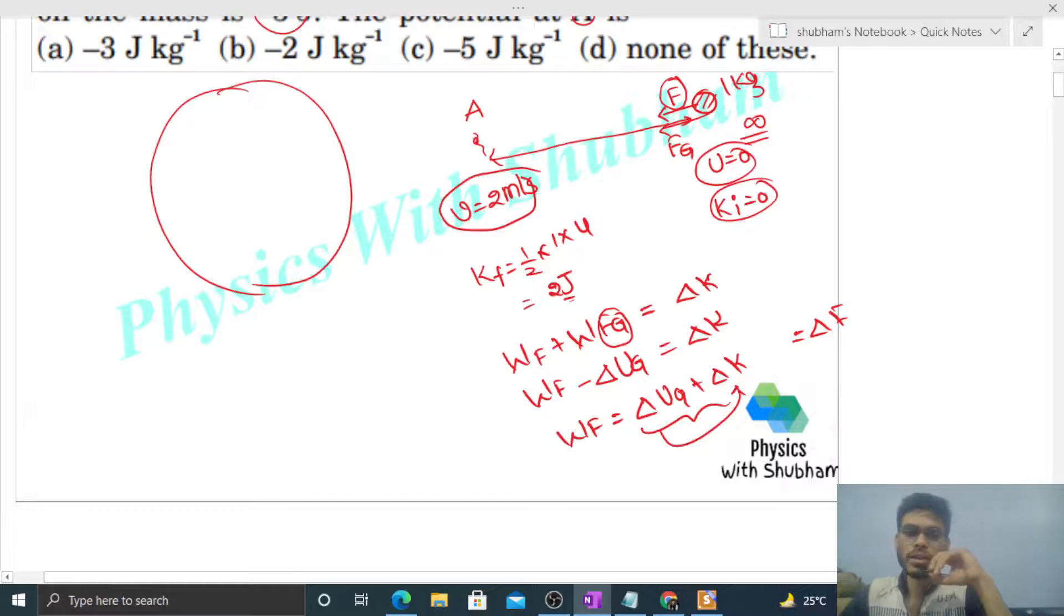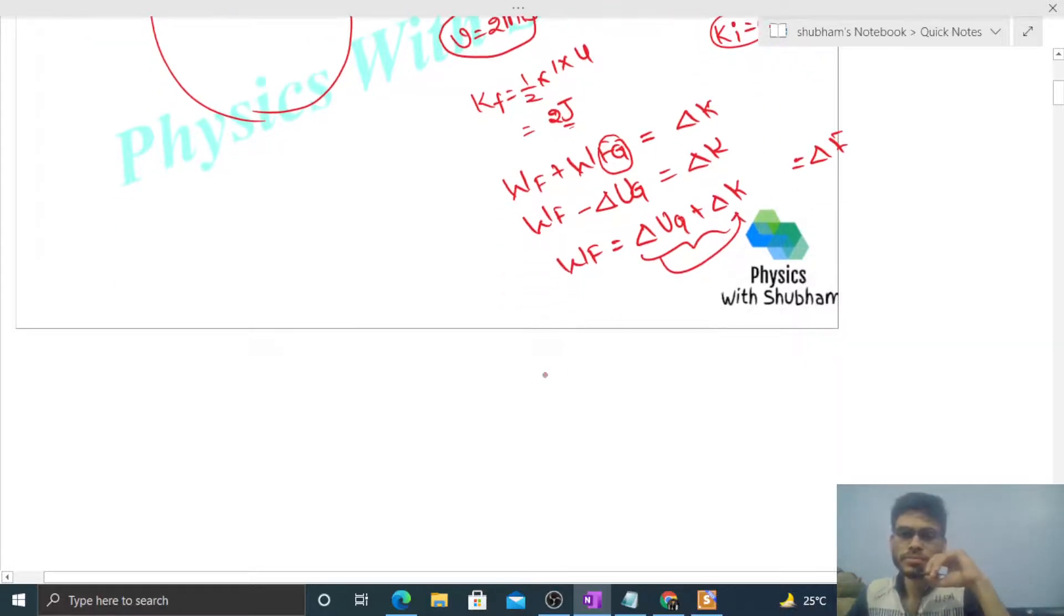So just write it: work done by capital F equals U final minus U initial plus K final minus K initial. Then initial potential energy will be zero at infinity. We take the potential energy to be zero. Initial kinetic energy is also zero. Final kinetic energy is 2, and U final... Work done by this capital F is also given, that is minus 3.